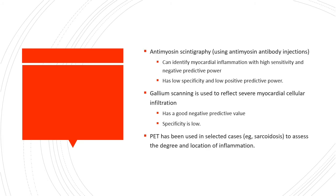Imaging modalities include antimyosin scintigraphy using antimyosin antibody injections, which can identify myocardial inflammation with high sensitivity and negative predictive power but has low specificity and low positive predictive value. Gallium scanning reflects severe myocardial cellular infiltration and has a good negative predictive value but low specificity. PET has been used in selected cases such as sarcoidosis to assess the degree and location of inflammation.